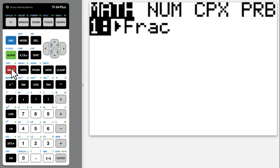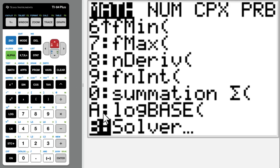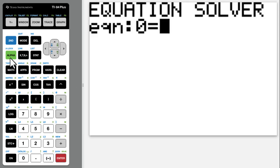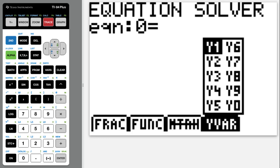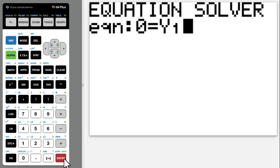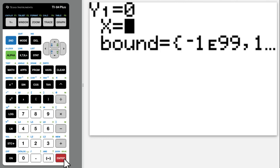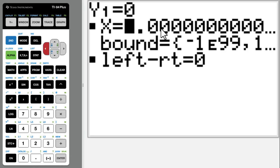Math, solver, alpha trace, y1, enter. Put 10 as the estimated value. Alpha enter. So you could say x1 equals 2.